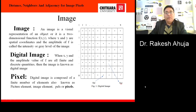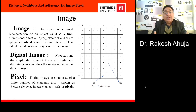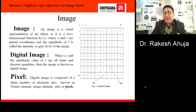First of all, we should know what is an Image. An image is nothing but a visual representation of an object, or it is a two-dimensional function f, where x, y are spatial coordinates and the amplitude of f is called the intensity or gray level of the image. A digital image is when x, y and the amplitude of f are all finite and discrete quantities.